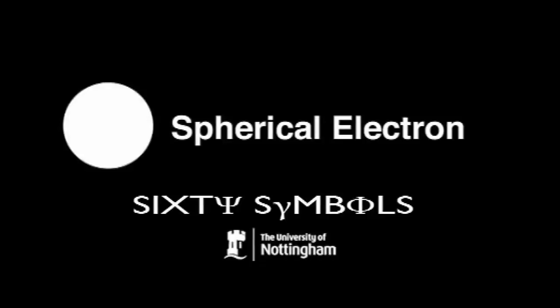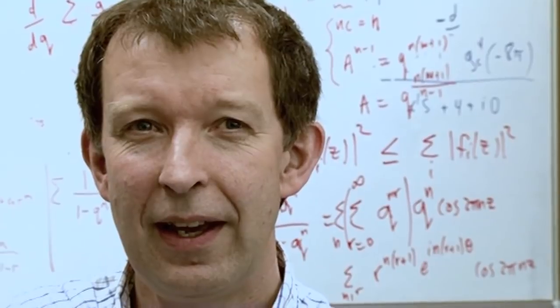I can't give you the heavy experimental details because it's too complicated for a theorist like myself, but I can tell you some of the background. First of all, why say the electron is a sphere?